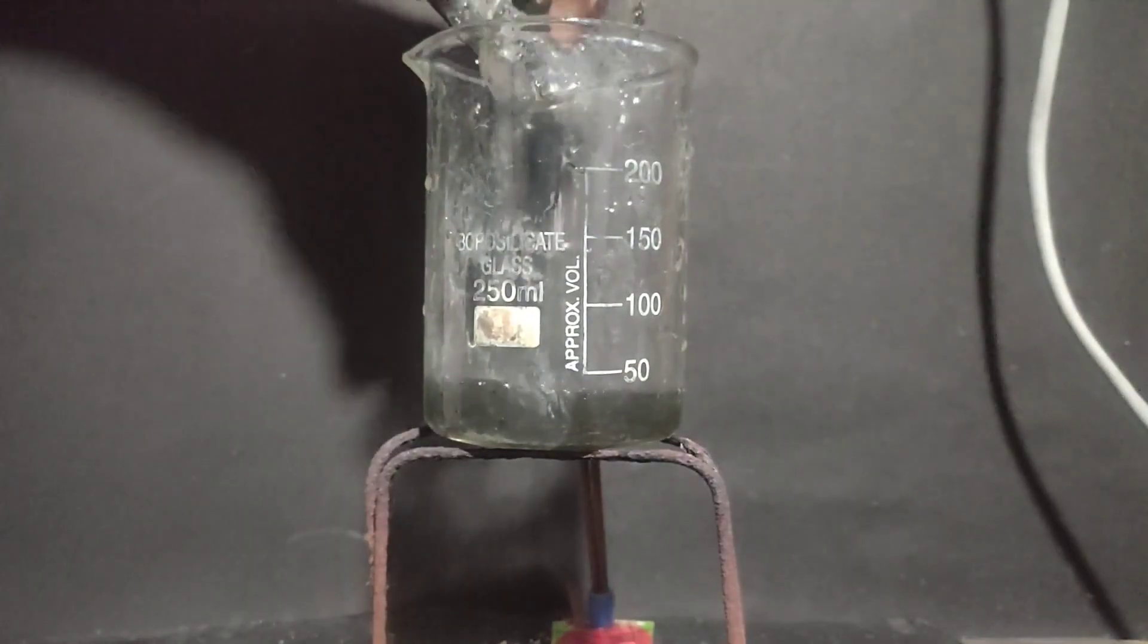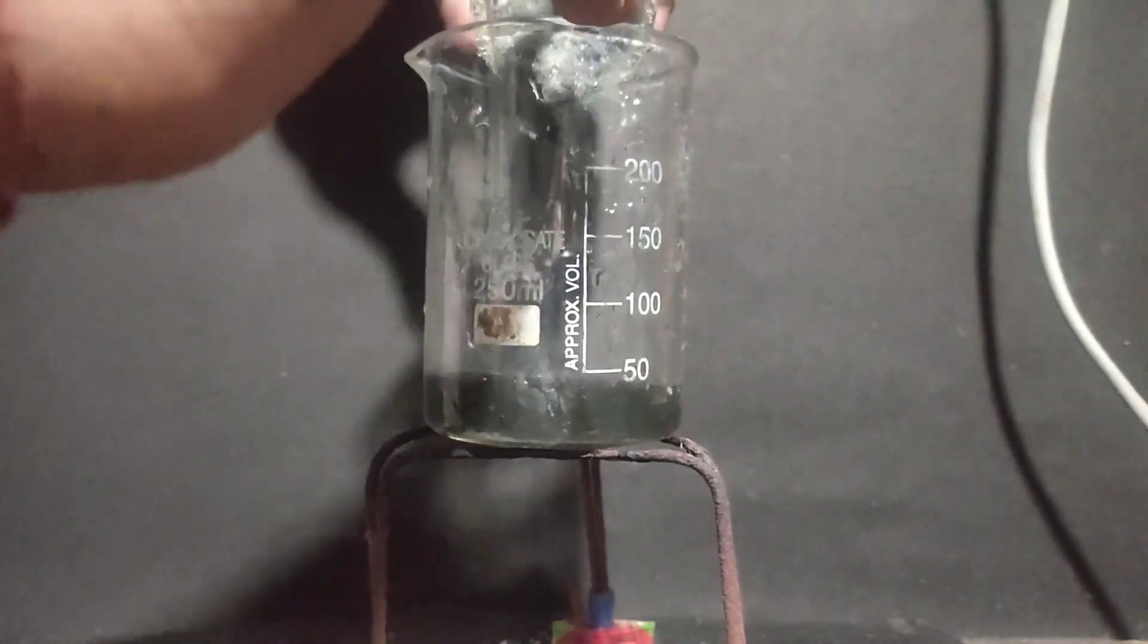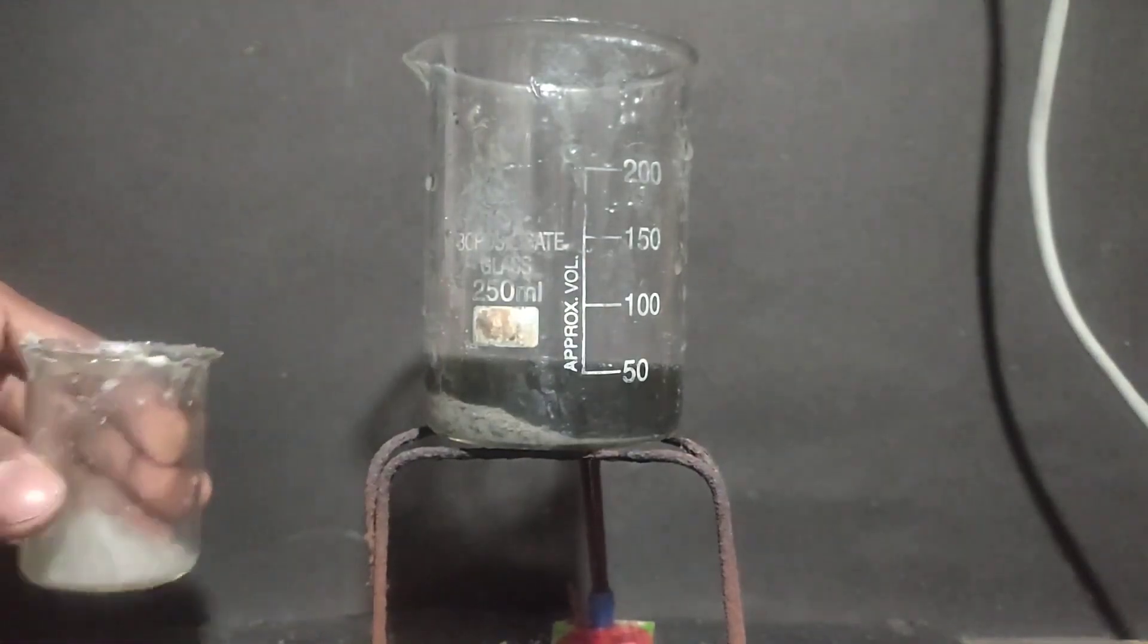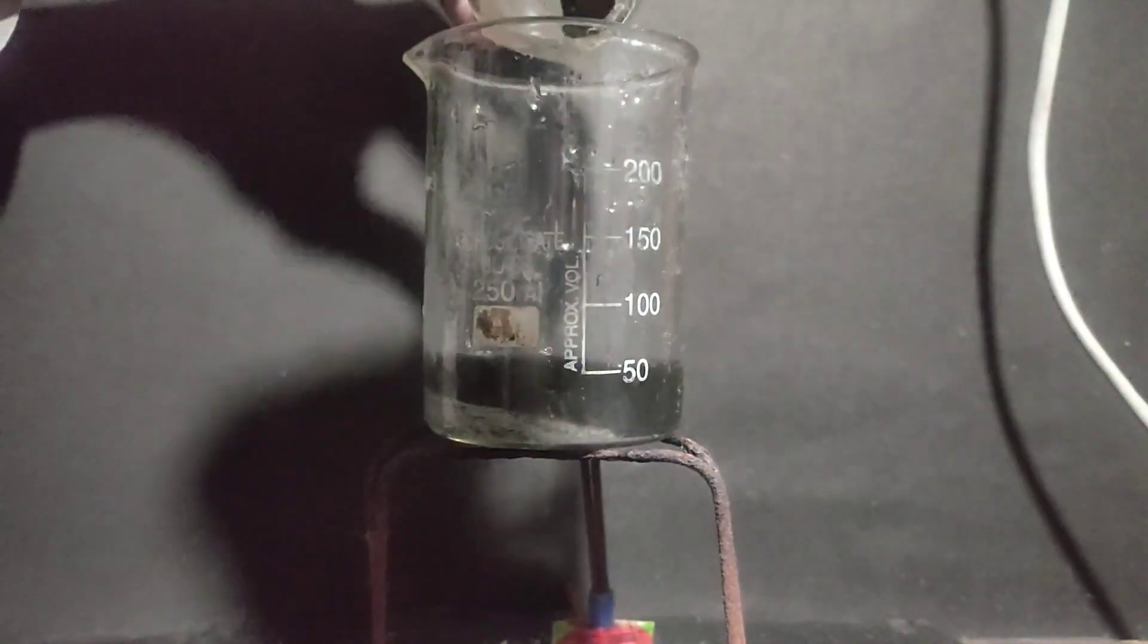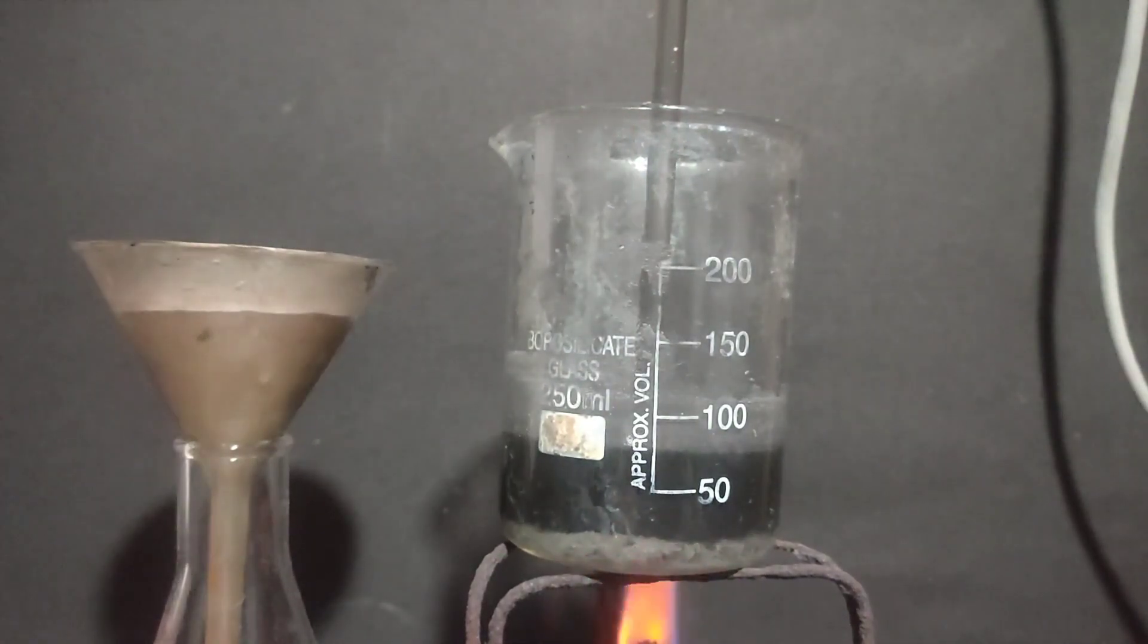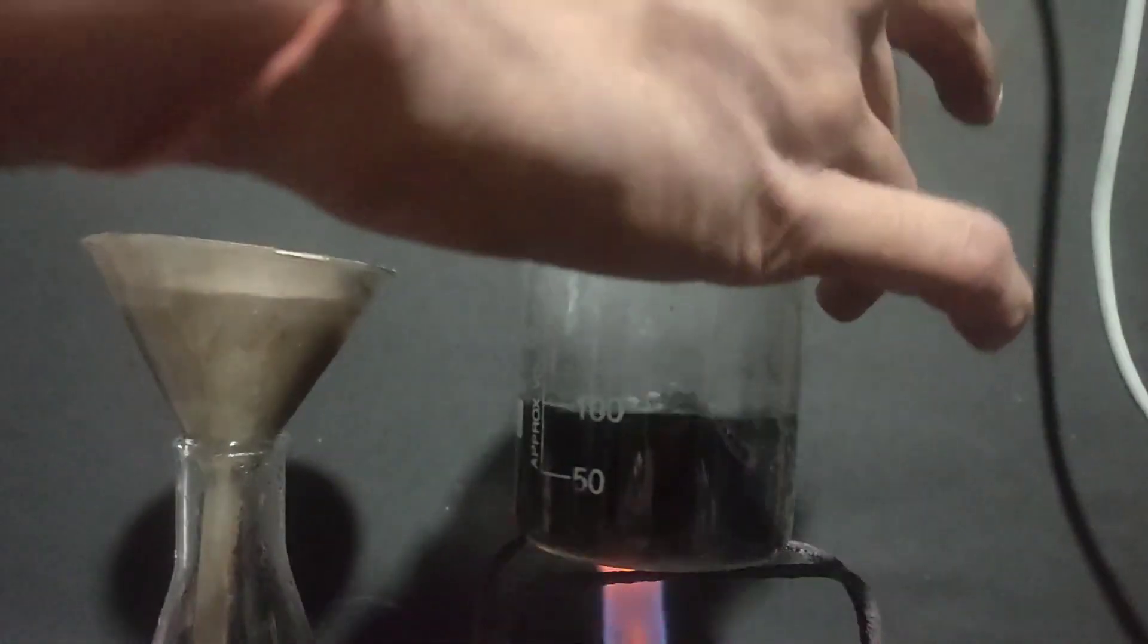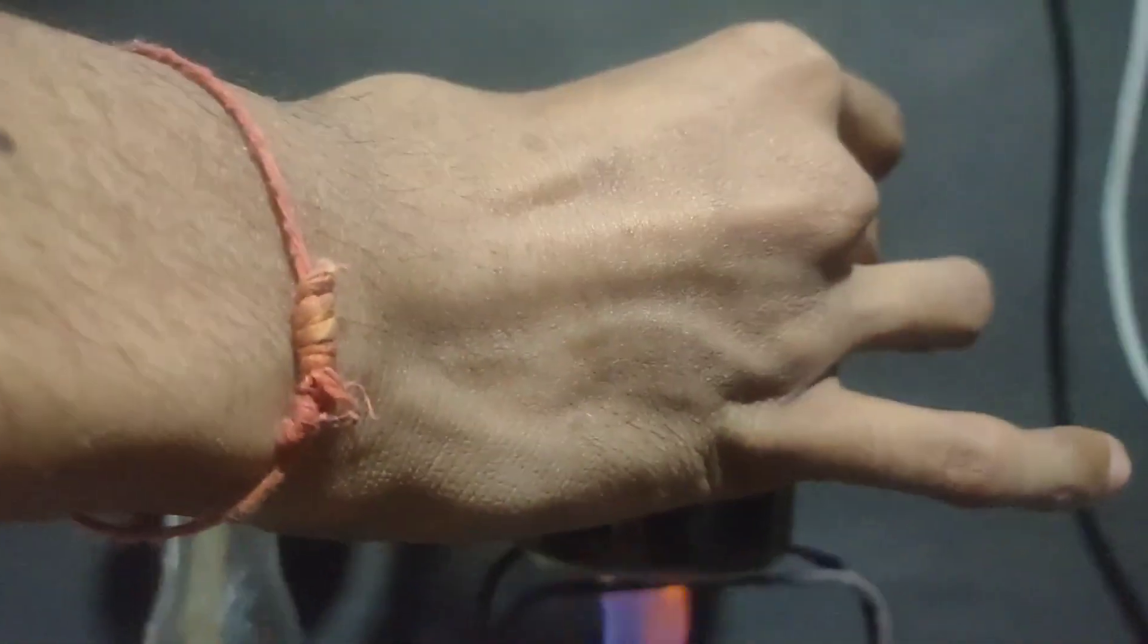So I transferred all the contents of the small beaker into a large 250 ml beaker and added enough water which could dissolve all this potassium bromate on heating the solution. Then I started heating the solution with stirring and I kept on adding water. I had to add around 100 ml of water and then I filtered the solution hot by gravity filtration.